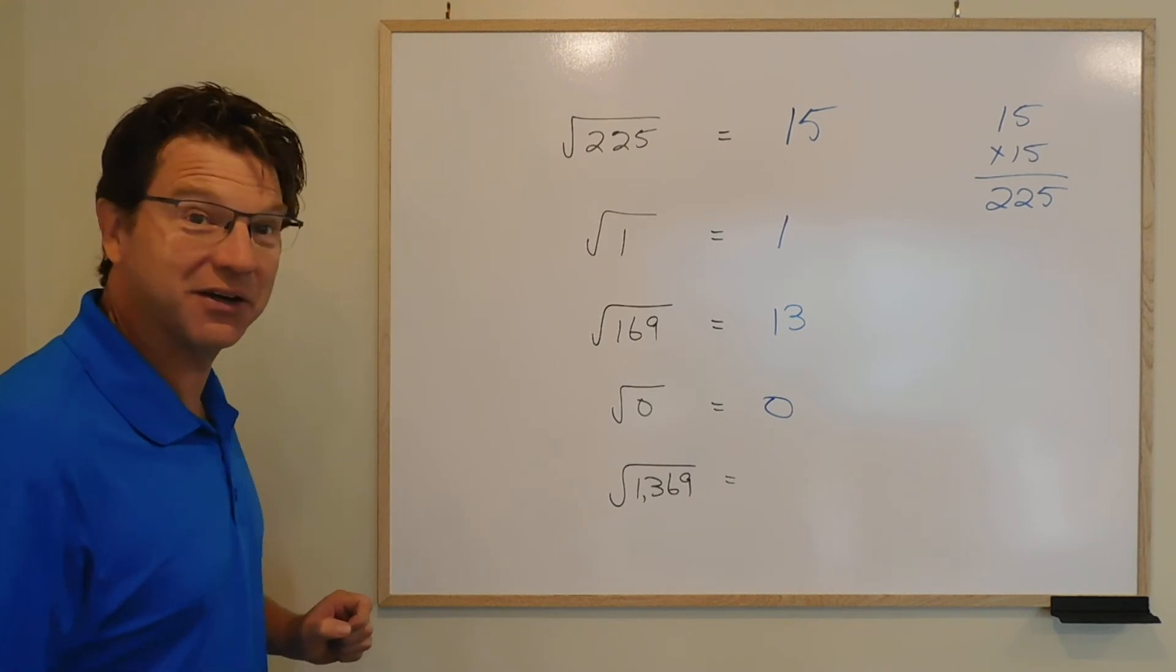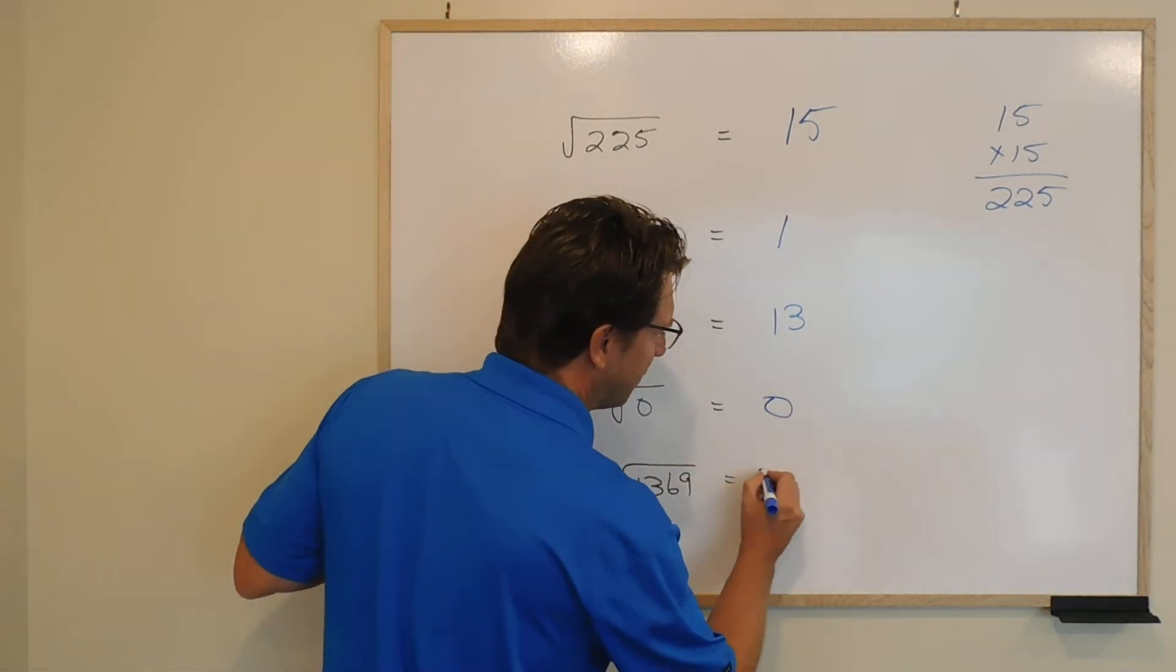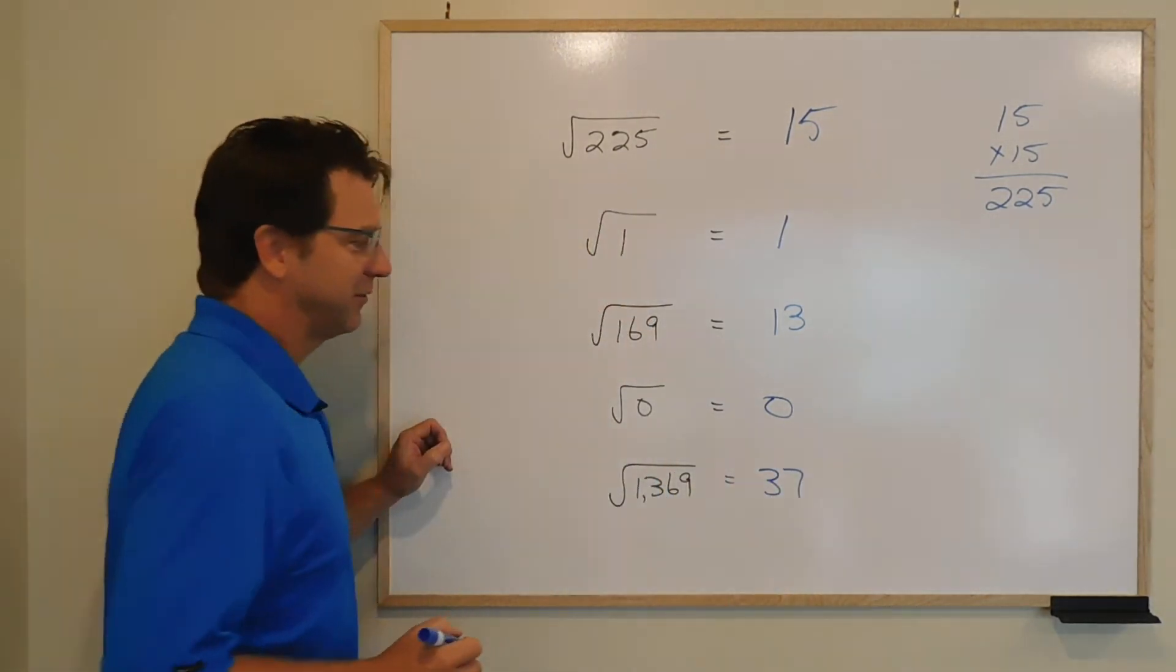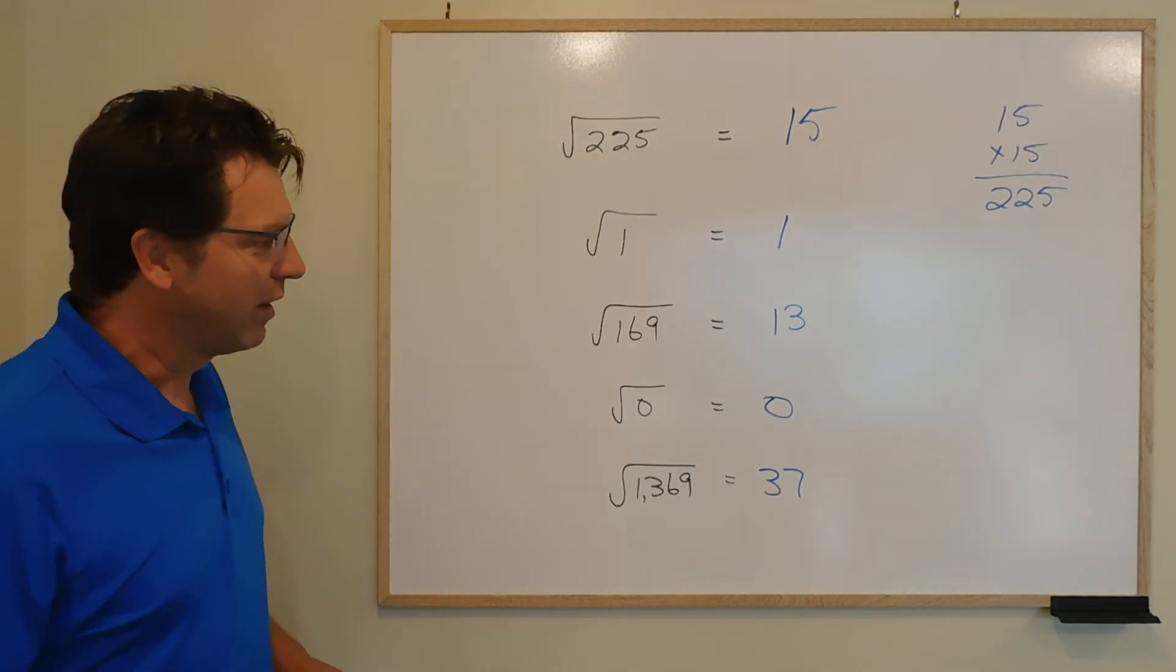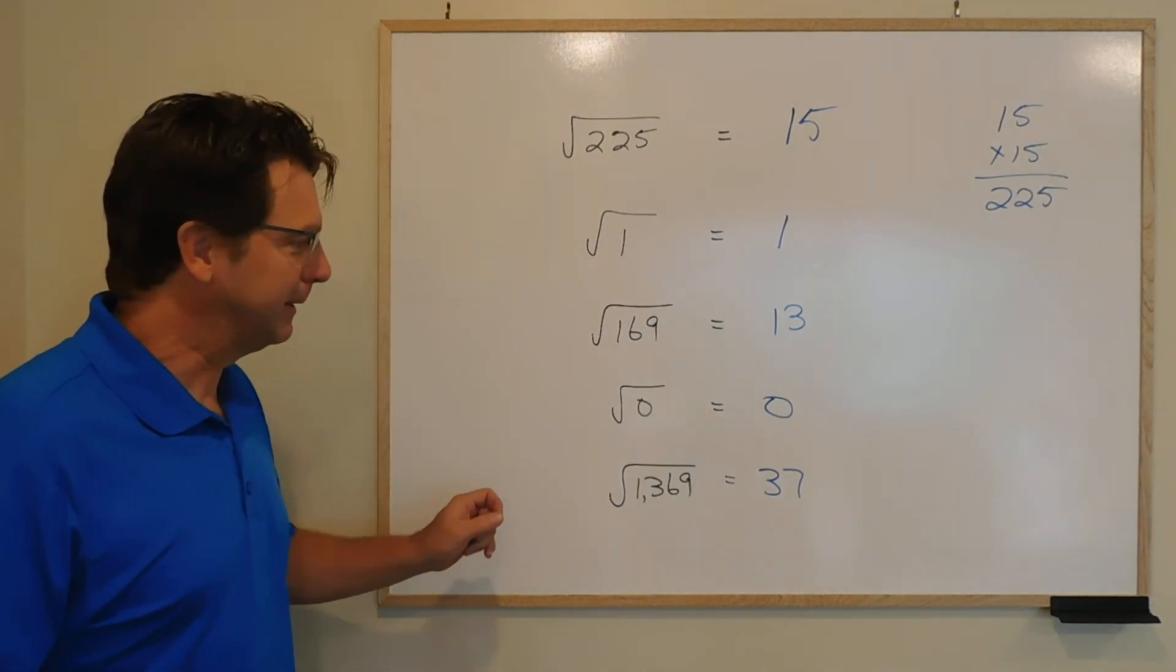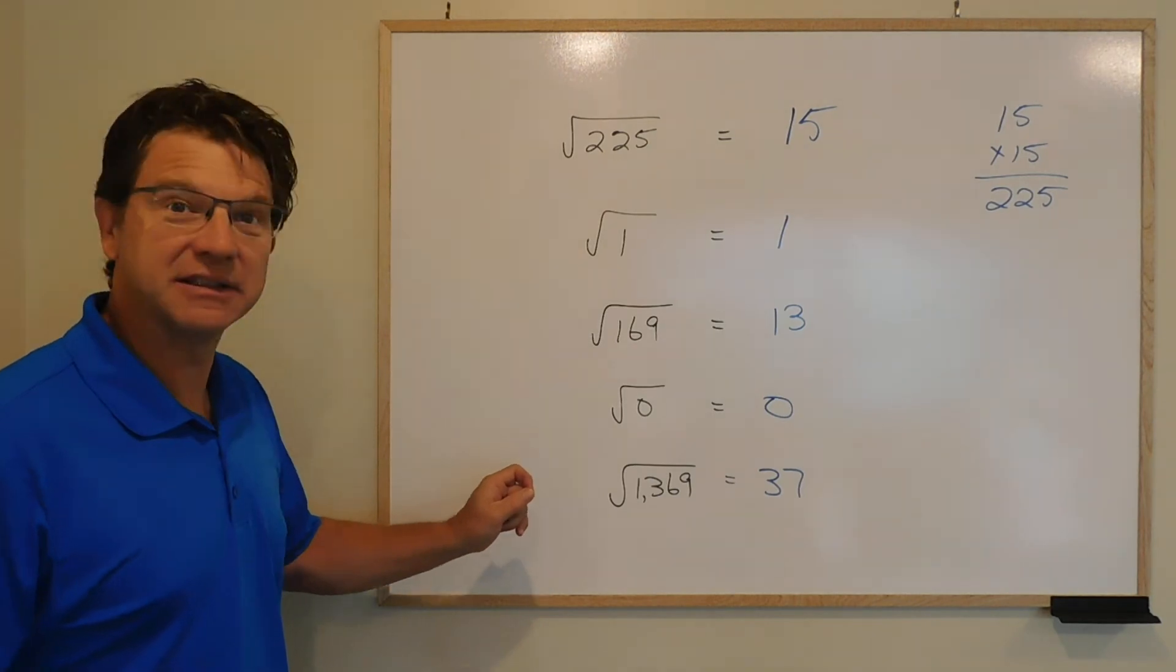And the square root of 1369 is equal to 37 because when you do it on your calculator, 37 times 37 equals 1369.